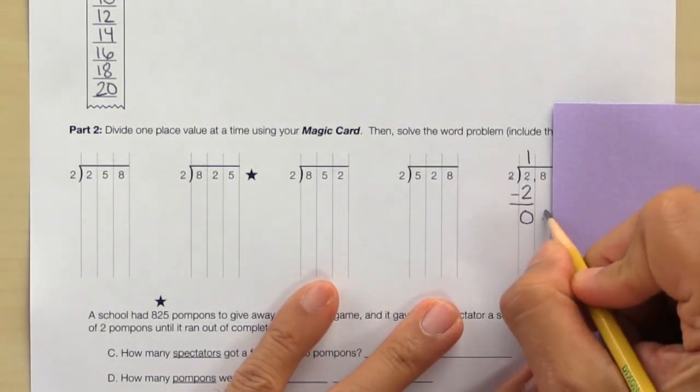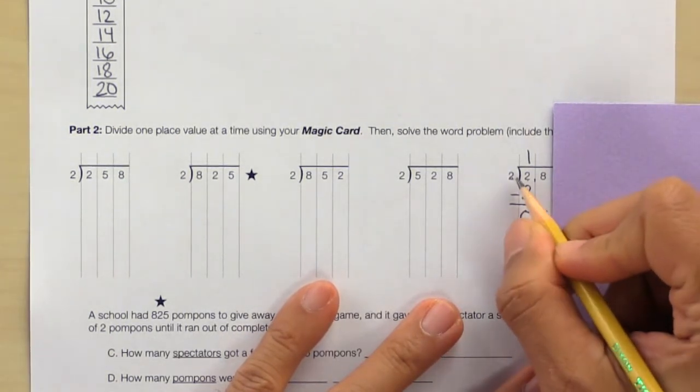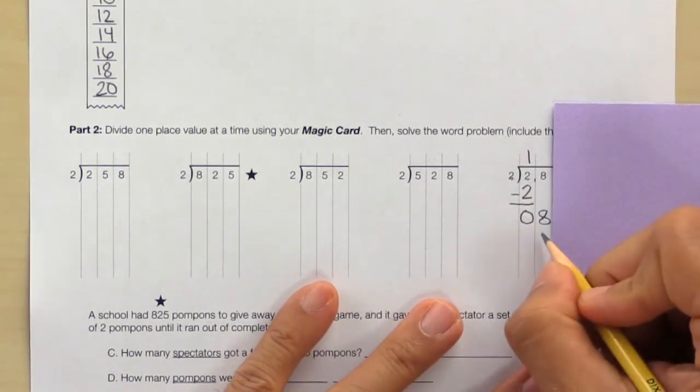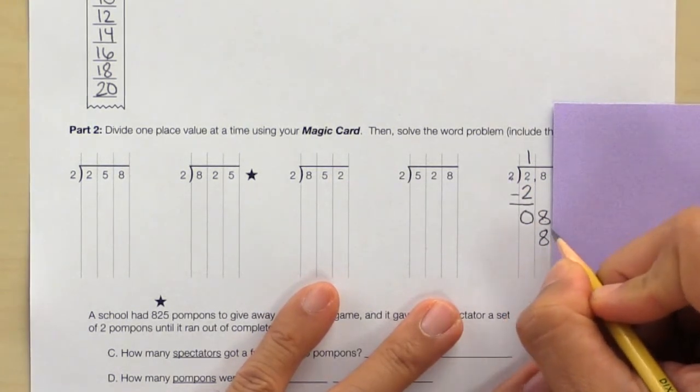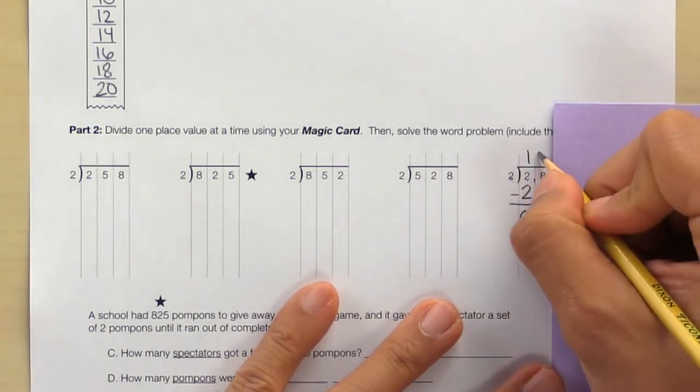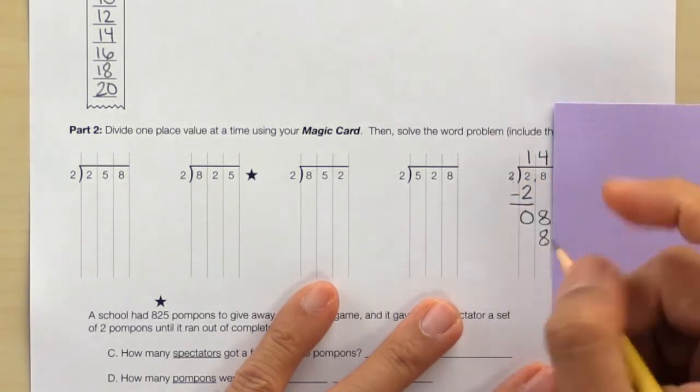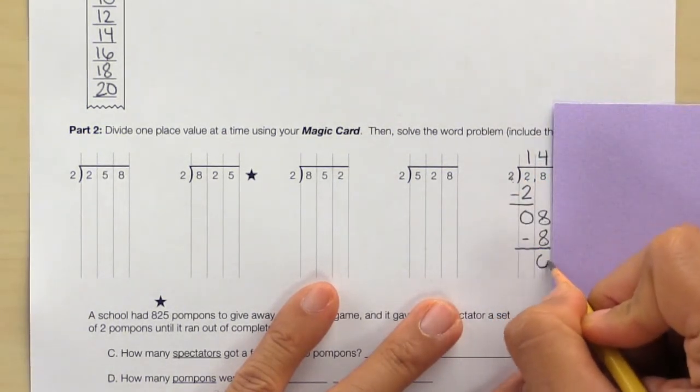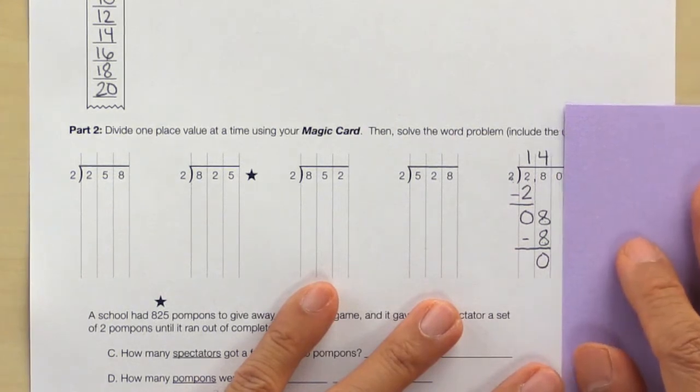Bring down the 8. Can we do 8 divided by 2 evenly? Yes. So write it down. If 8 divided by 2 equals 4, then 4 times 2 equals 8. Subtract and slide.